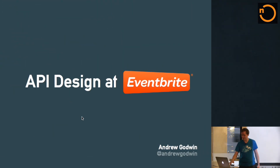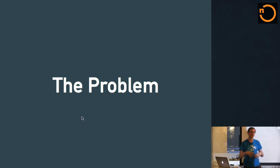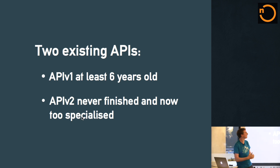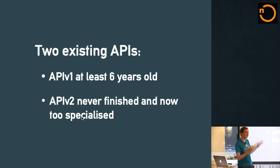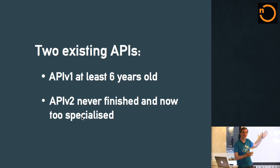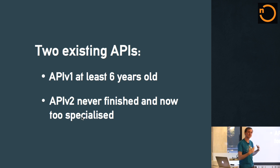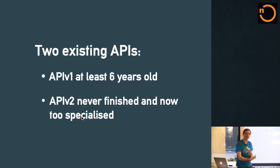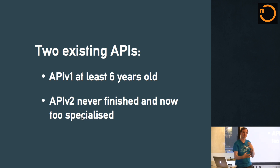Coming into Eventbrite, one of the very first things I was given was this problem: the idea that Eventbrite has an API, but actually it has two APIs. API v1 is at least six years old — I went back in Git six years and it says 'imported from subversion,' so it's at least six years old. And API v2, which was of course called 'Next Generation API' — a very bad name to give anything.